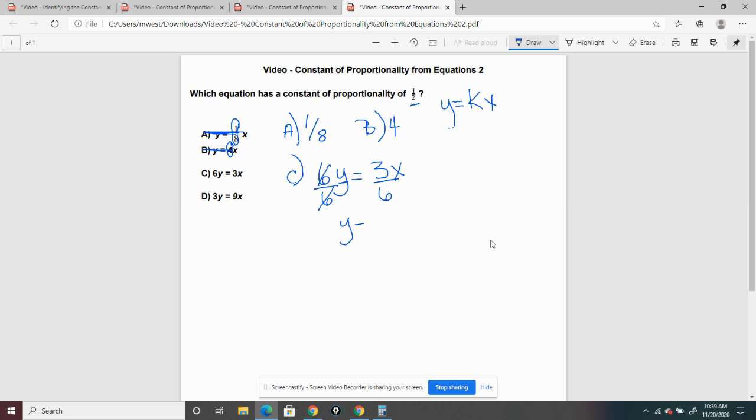And we've got y equals 3 over 6x. And us knowing our timetables know that that also simplifies to y equals one-half x, which gives us that constant of proportionality of one-half. So our answer is going to be C.